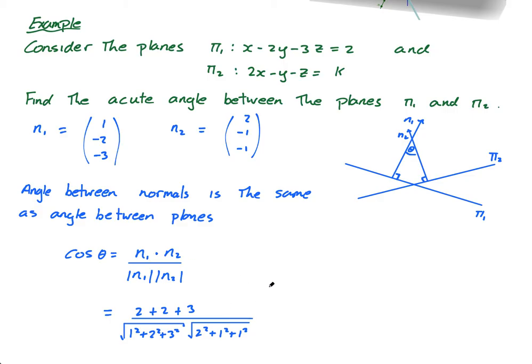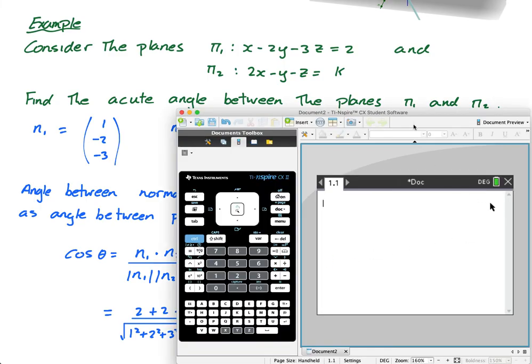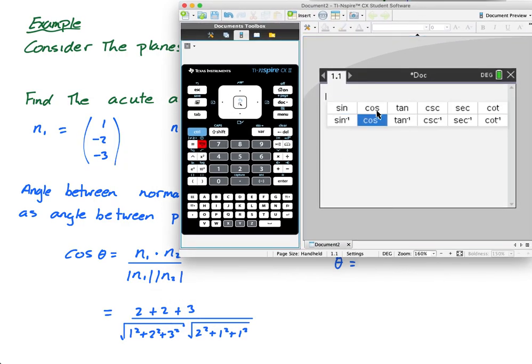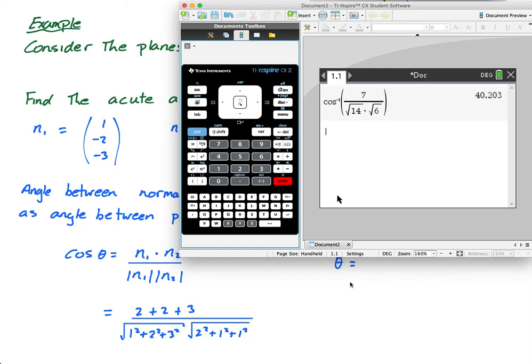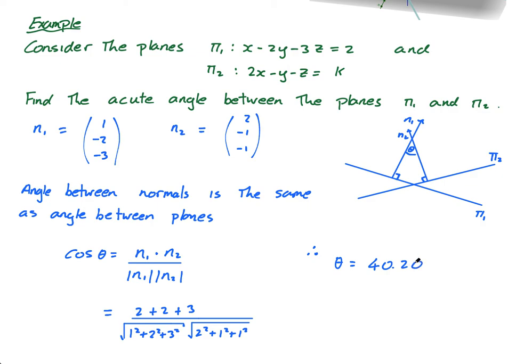And this is cos θ, therefore θ equals, and I just need to do the inverse cos of this, so I'm going to go trig, inverse cos, put in my brackets, and I'll do 7 over the square root of, you can write this out or I'm going to do it in my head, this is 9, 10, 14, and then multiply by the square root of 4, 5, 6, inverse cos of this, I'm in degrees, press enter, 40.203 degrees, approximately equal to 40.2 degrees to three significant figures.